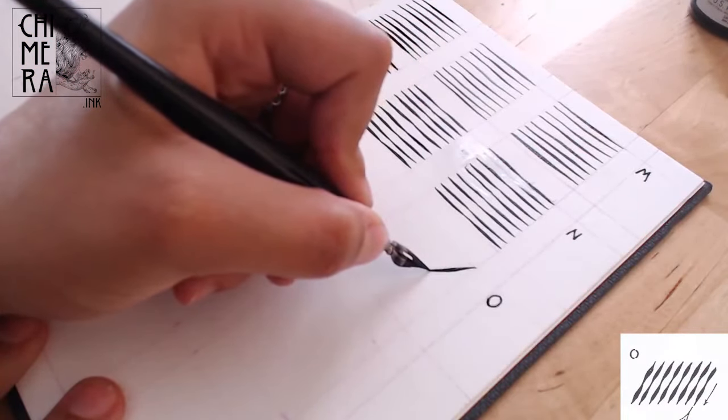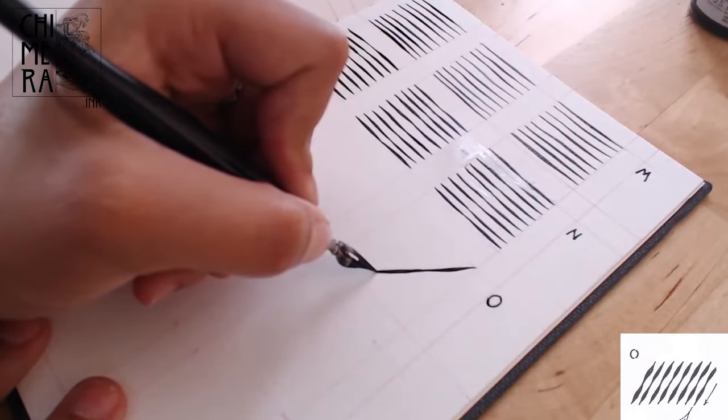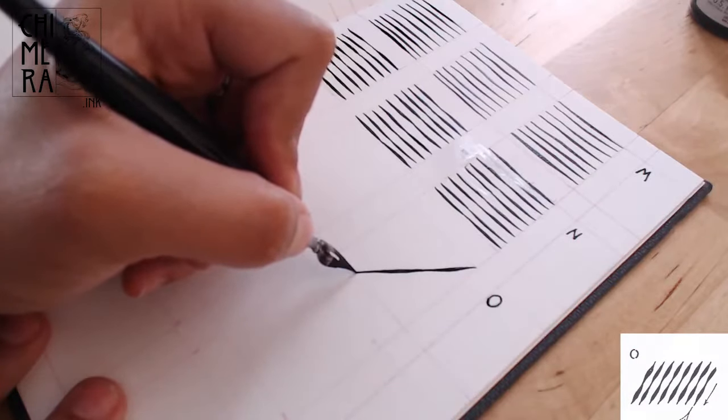O is same as N, but slant-wise. I found that one would be easier to do in one full motion. So it's all about the angle and rhythm of your hand.